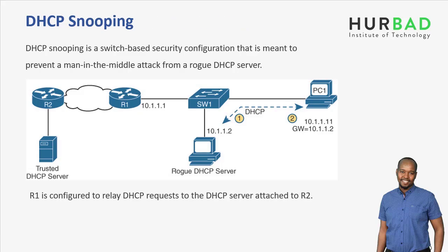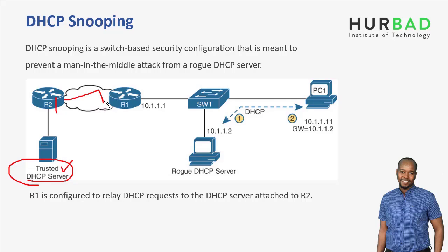If you look at the diagram, you can see DHCP Snooping. This is the DHCP server that is trusted. If you look at the router or the internet, you can see the router or the switch.